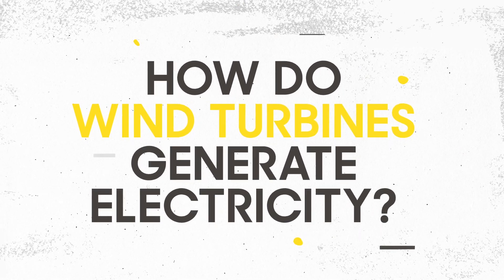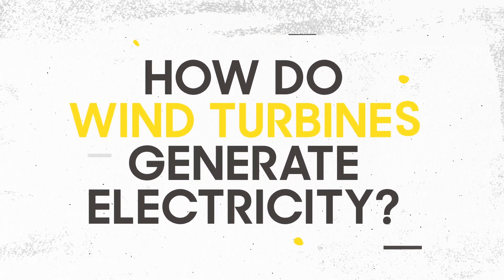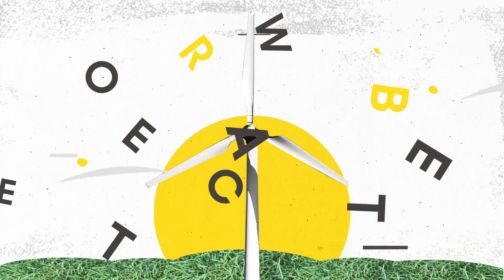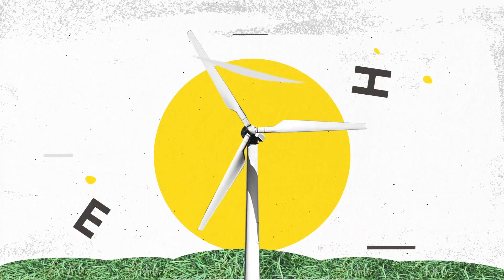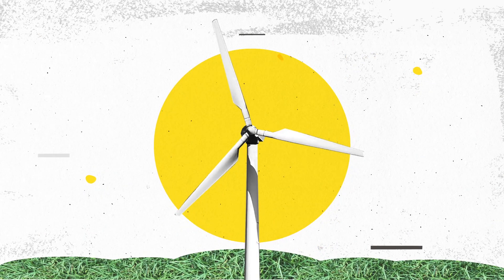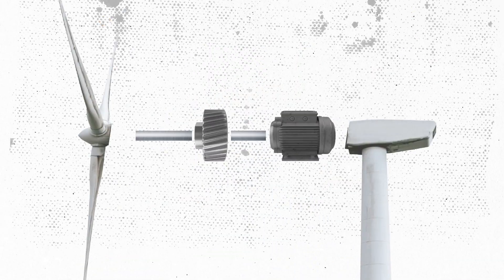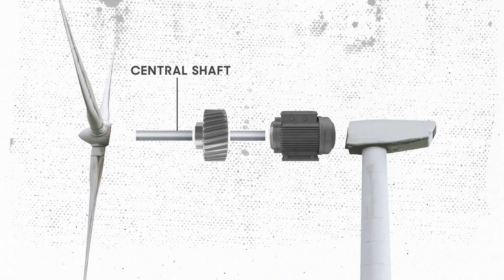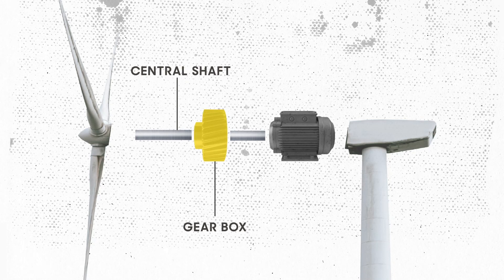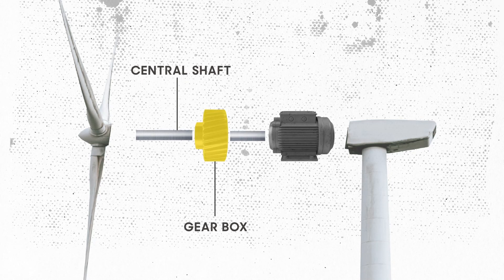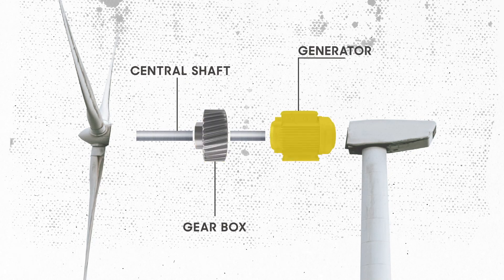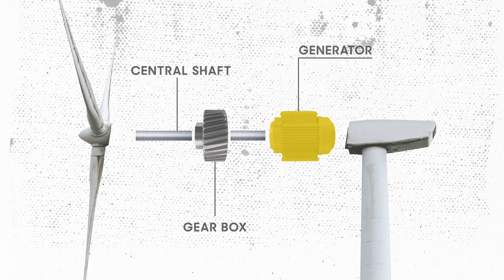How do wind turbines generate electricity? Wind passes over the turbine blades and makes them turn. The blades turn the central shaft. A gearbox shifts this slow rotation to a speed high enough to spin a generator.